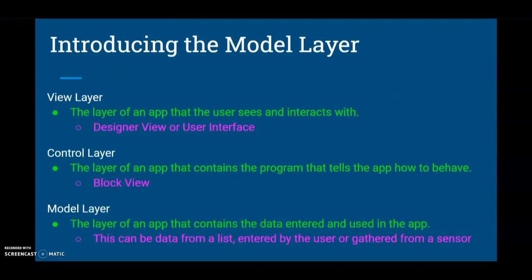Before jumping into our app, there are a few things we need to understand about our model layer. At this point you've learned about two different layers: the view layer, which is where the user can see and interact with the app — also known as the designer view or user interface — and the control layer, which contains all the programming that tells the app how to behave, known as the block view.